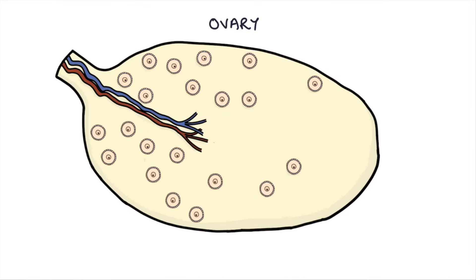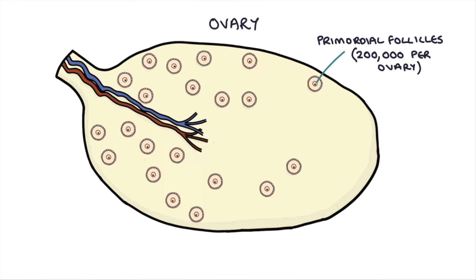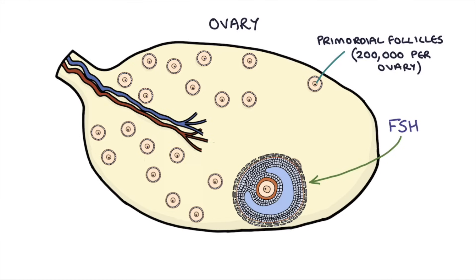Each ovary has a finite number of immature eggs called primordial follicles — about 200,000 in each ovary. They lie waiting for the woman's whole life, from birth until the month that they become active. So once a month, at the start of the menstrual cycle, follicle-stimulating hormone stimulates 15 or 20 of these follicles to start developing within the ovaries. As the follicles develop, the cells surrounding them, called the granulosa cells, secrete increasing amounts of estrogen.